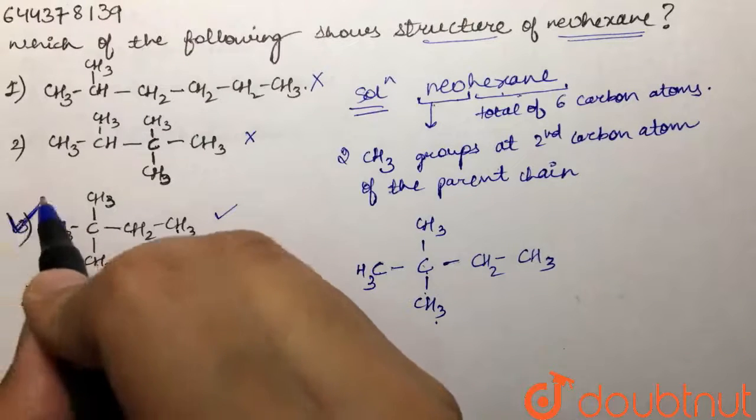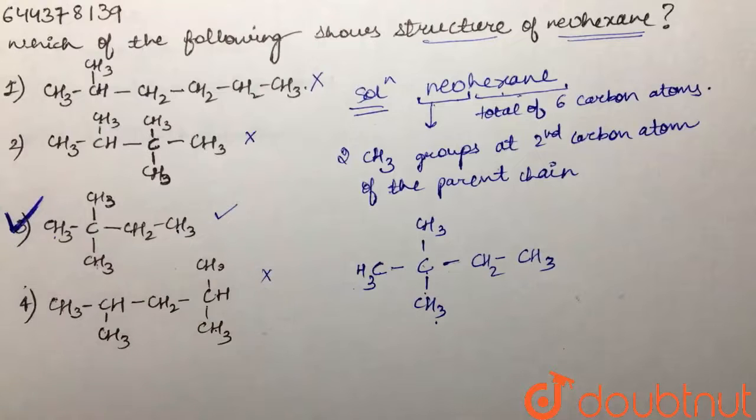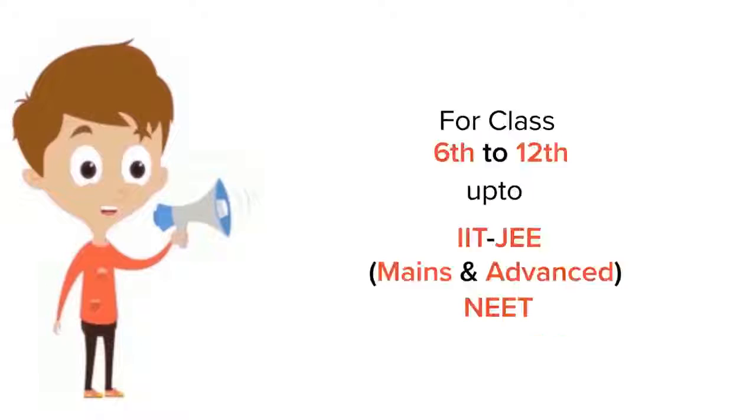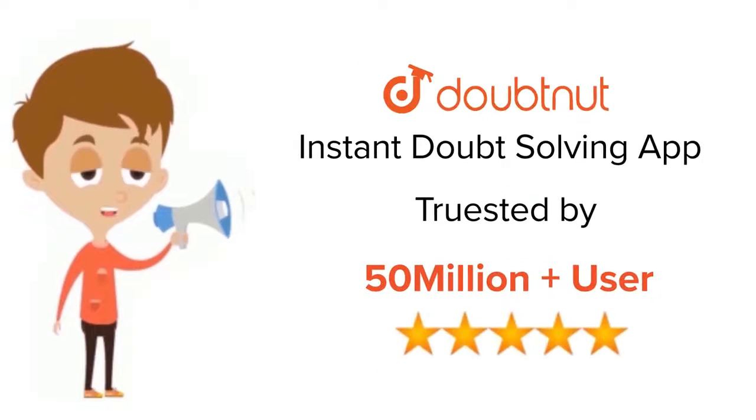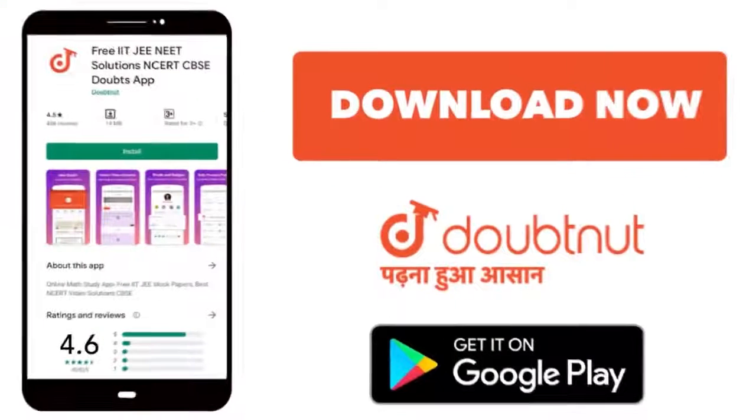Our answer is the third option. This is the structure for neohexane. For class 6-12, IIT-JEE, and NEET level content, trusted by more than 5 crore students, download Doubtnet app today.